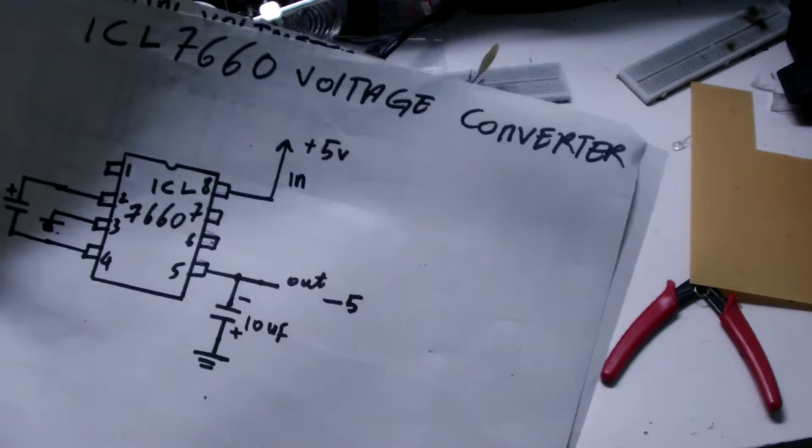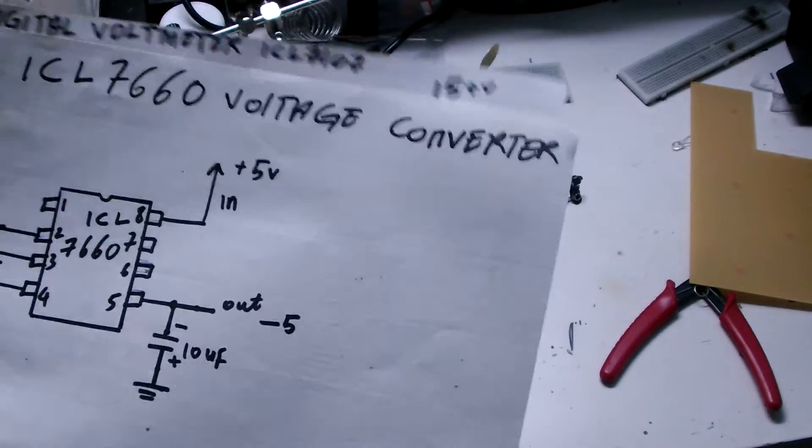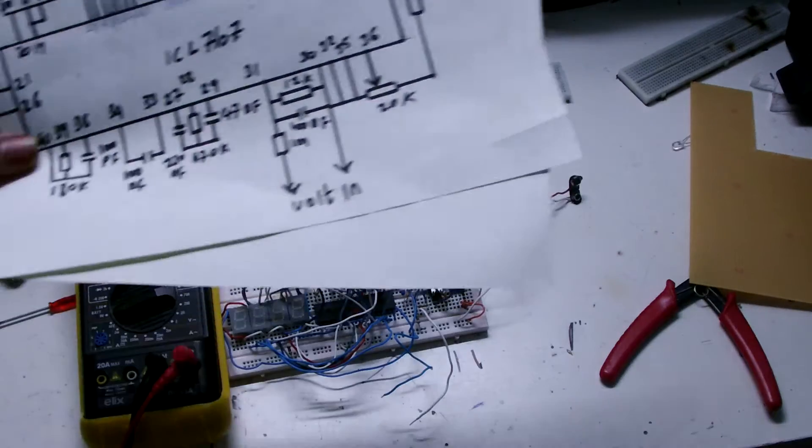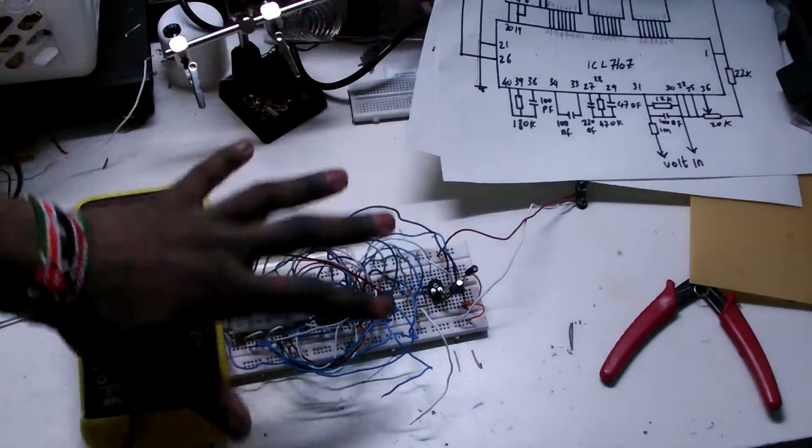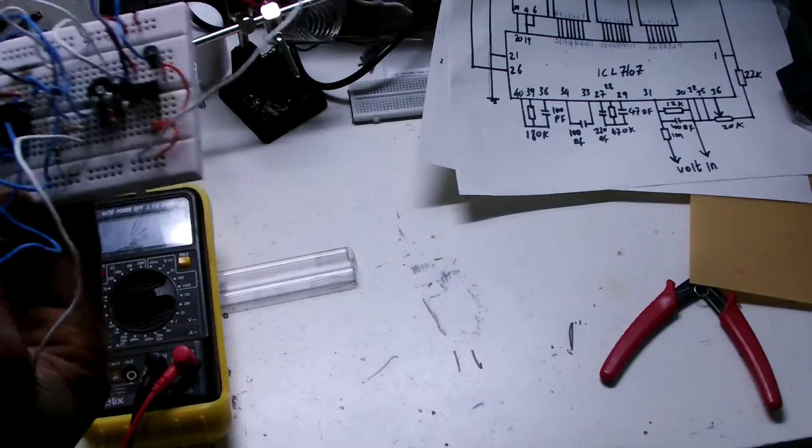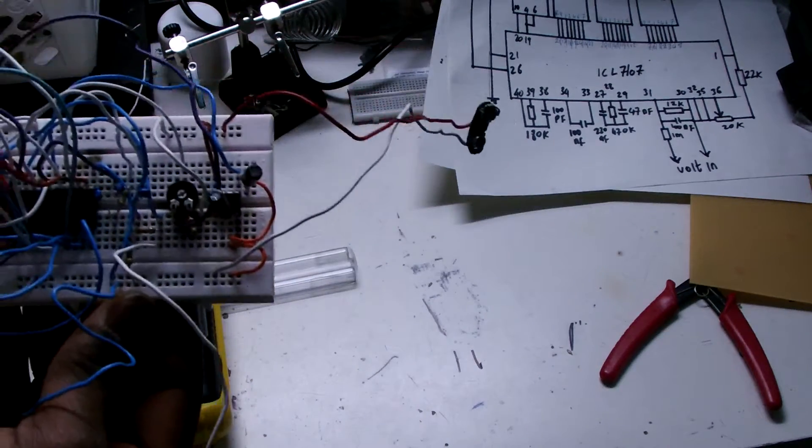It's a voltage converter. You need these two ICs to make a digital voltmeter. So here is the circuit already assembled.